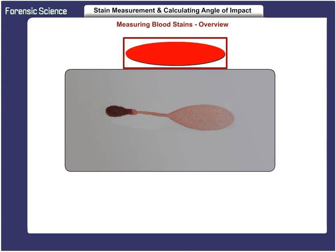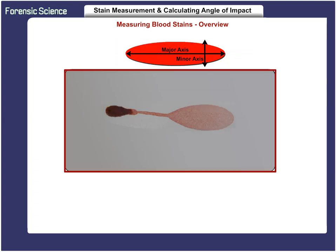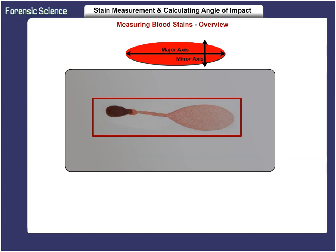If a stain is well formed, we can accurately measure the width and length of the stain by simply dividing the stain along its major and minor axis. Because the opposite halves would generally be equal to each other, this calculation establishes the angle of impact. Blood drops that are projected onto an object form ellipses when they impact the object at an angle less than 90 degrees.